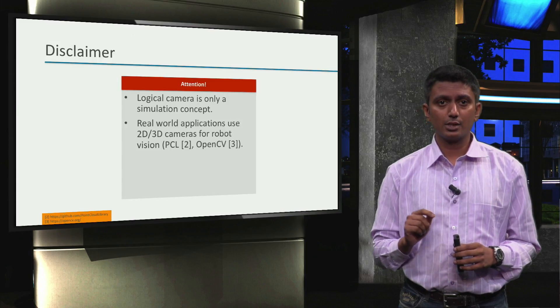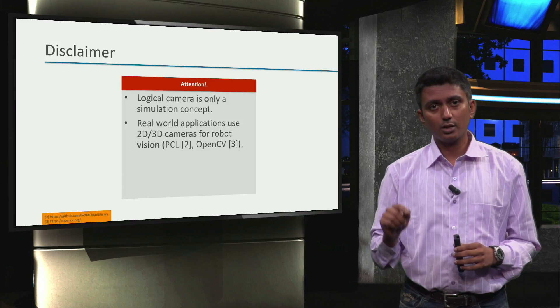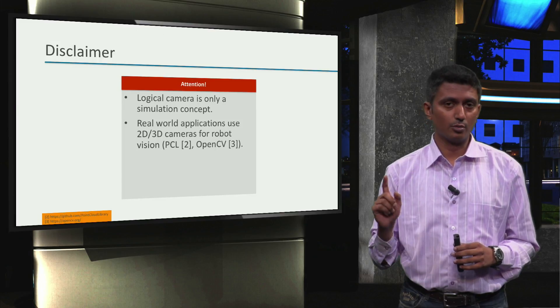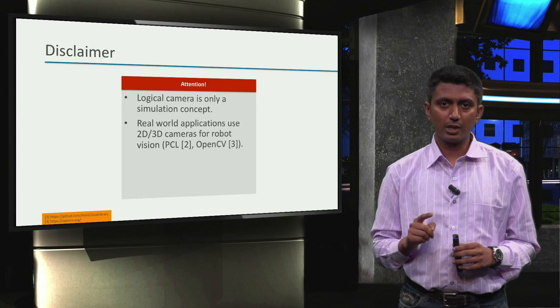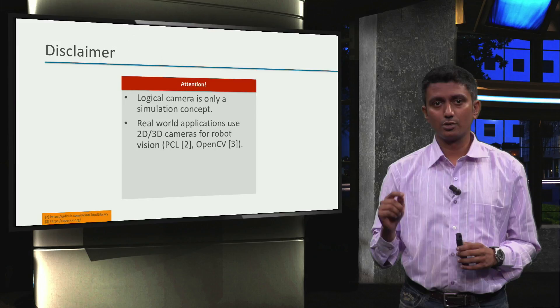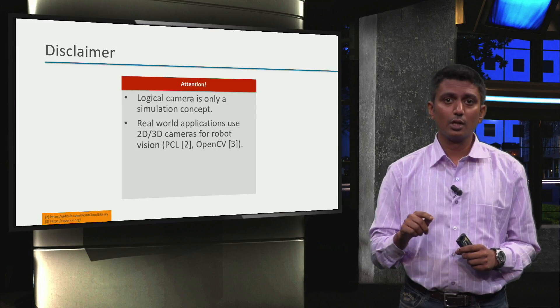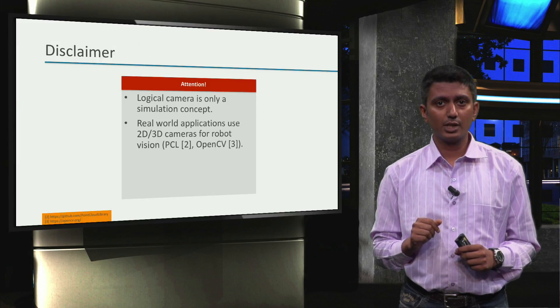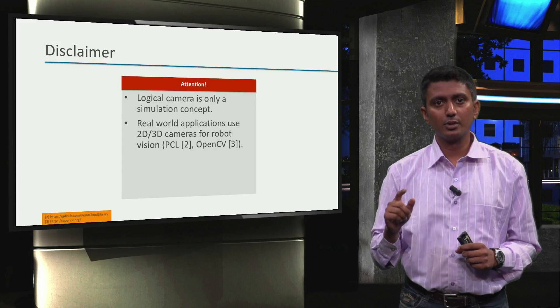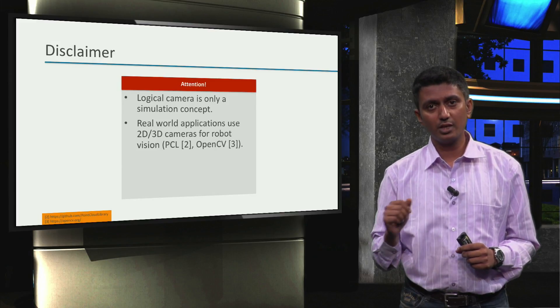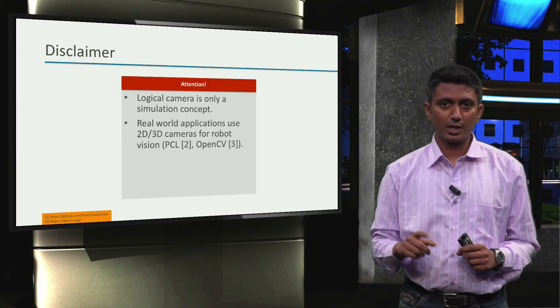Real-world applications as on today do need 2D and 3D cameras for robot vision. And typically, real-world robot vision solutions using ROS leverage open source libraries such as the Point Cloud Library and the Open Computer Vision or OpenCV Library for object detection, recognition and pose estimation.